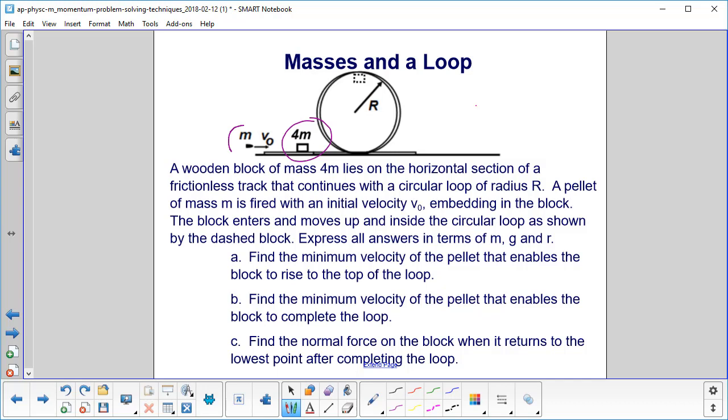A pellet of mass m is fired with an initial velocity of v0. It gets stuck in the block. The block, because it gets hit by the pellet, moves up and around the loop on the inside of it like that.